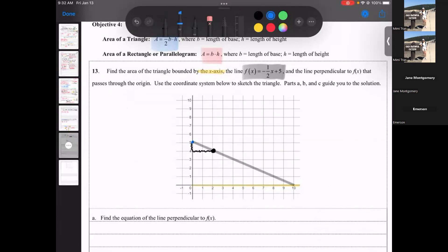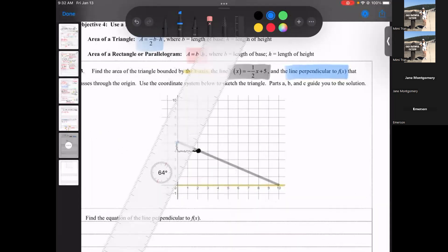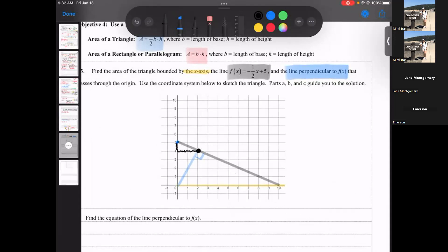What else? It's also bounded by the line perpendicular to f of x. All right, so a line perpendicular to the black line. Okay, so the triangle, the area, the triangle that we're looking for is bounded by those three lines, which is this one, right? Yes.